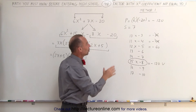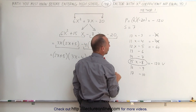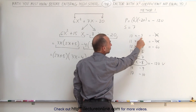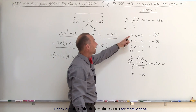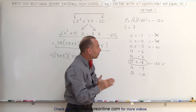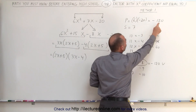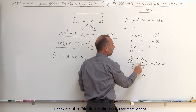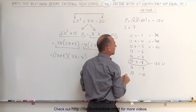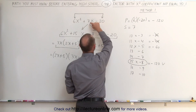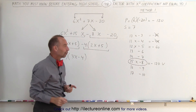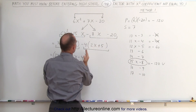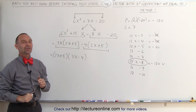You look for all combinations of numbers that add to positive 7. The positive number must be 7 bigger than the negative number, like 10 and negative 3. But when you multiply those two numbers, you must get minus 120. The only combination that works is 15 times negative 8, which gives negative 120 and sums to positive 7. Therefore, you write those two coefficients in the middle, then use the grouping technique to complete the factoring. And that's how it's done.